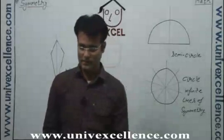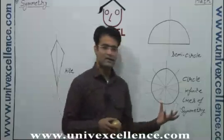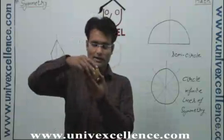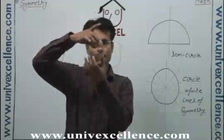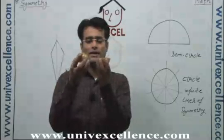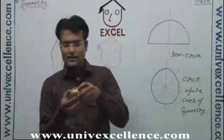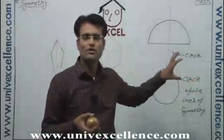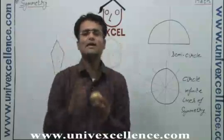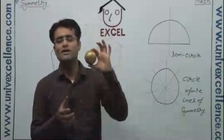Now let's see one more figure. This is a sphere. If you cut it from the middle, you get two similar spheres. Just imagine this sphere as a circle — if we cut it from here we get two semicircles, from any point we cut it we get two semicircles. So there are infinite lines of symmetry for a circle, or we can say, for a sphere as well.